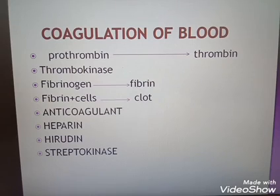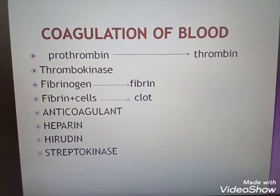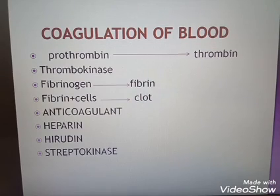Thrombokinase converts the prothrombin into thrombin. Then thrombokinase acts on the inactive form of fibrinogen. The fibrinogen is converted to the active form, fibrin. The fibrin forms a mesh at the wound with calcium ions, and then the wound is healed.